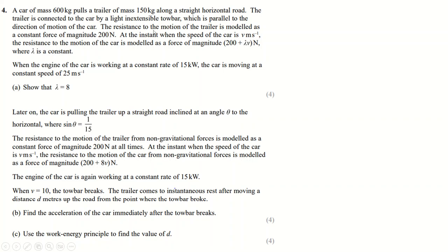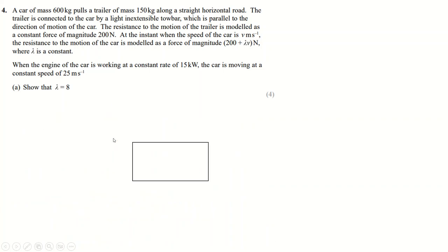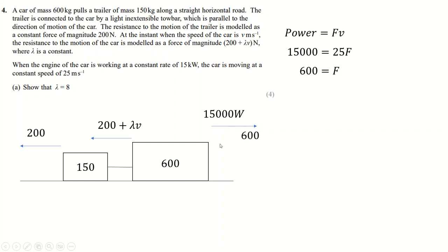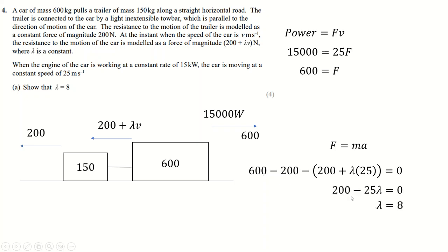Question four: a car of mass M with a trailer. The car has a driving power of 15,000 watts. At speed 25 m/s, using Power = F × V, the driving force is 600 N. Resistance on the car is 200 N, on the trailer is 200 + λV. Setting up F = MA with constant speed so A = 0, we get 600 equals 200 plus (200 + λ×25). Solving gives λ equals 8.